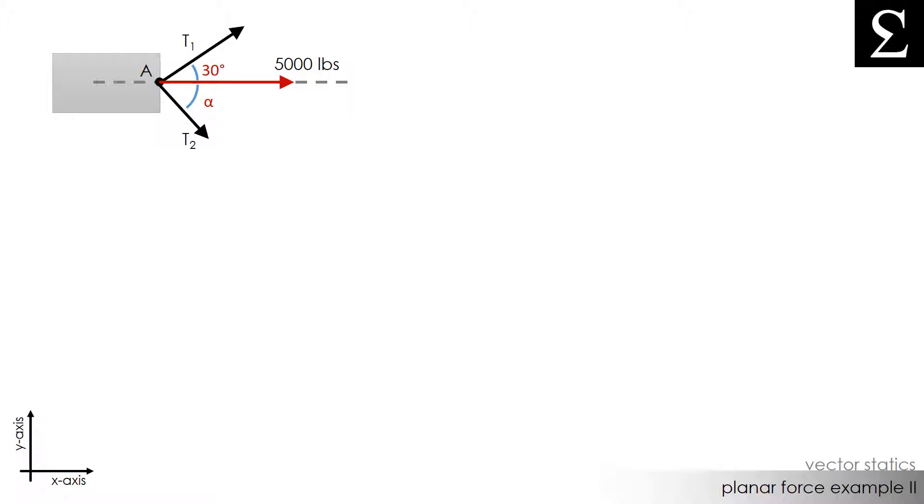In order for T2 to be at a minimum value, the vector T2 needs to be perpendicular to vector T1. In other words, when T2 is positioned at the tip of T1, the angle they form is 90 degrees. We can easily calculate the angle now as 180 degrees minus 30 degrees minus 90 degrees. We see that angle alpha is 60 degrees.